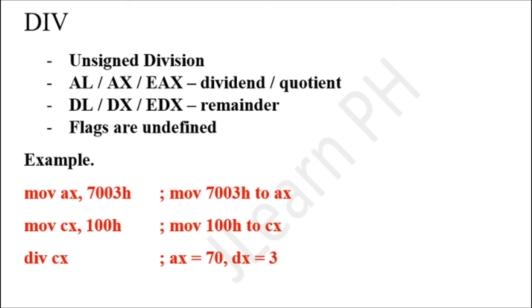Then we call DIV CX. This divides the contents inside AX with the contents inside CX, so that becomes 7003h divided by 100h. The result will be 70 remainder 3. 70 will be stored into AX, and the remainder 3 will be stored into DX. That is how you use the DIV instruction.